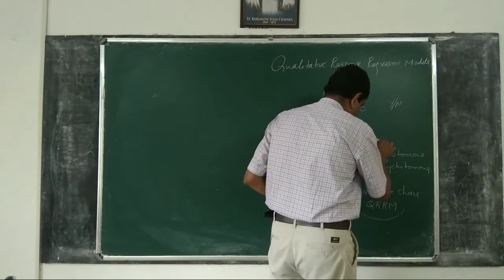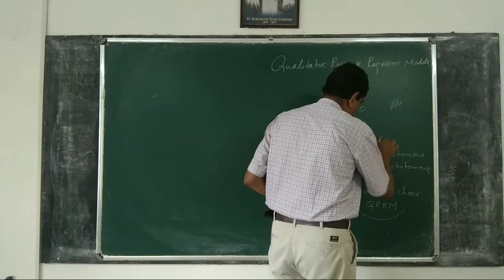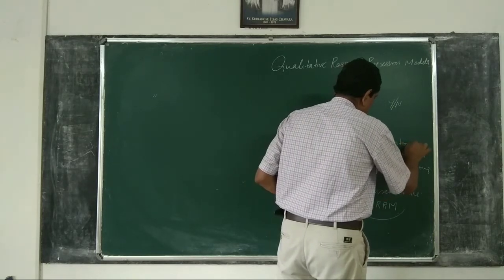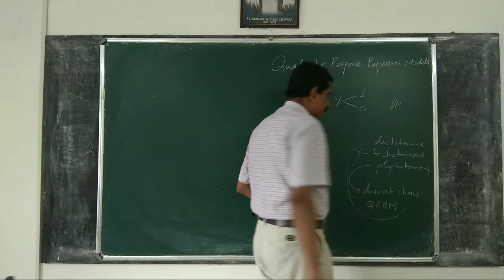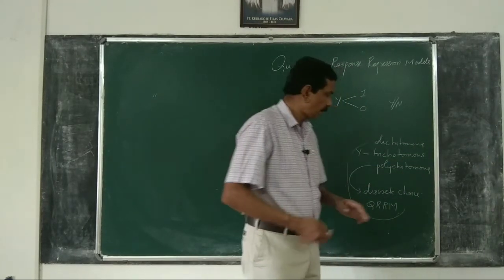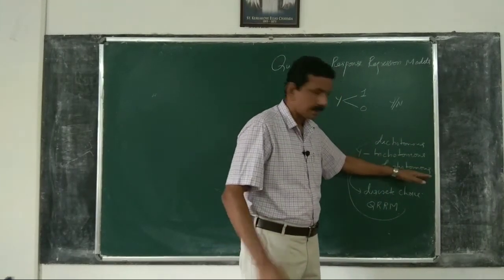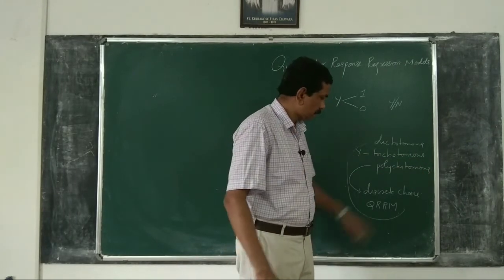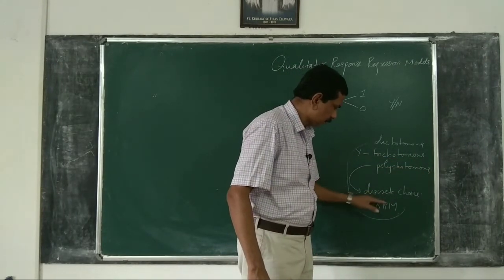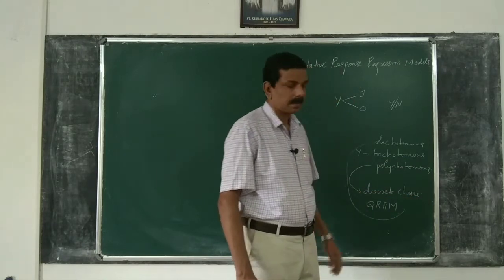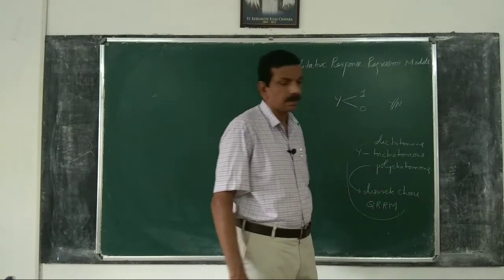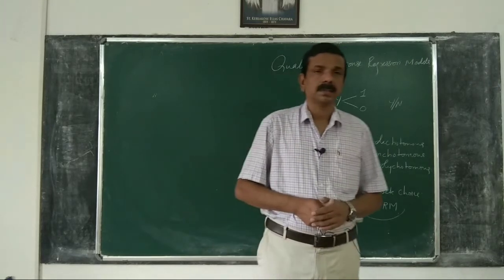Dichotomous means two values, trichotomous means three values, and polychotomous means multiple categories — four, five, etc. As Y takes a limited number of values, we have discrete choice models, also called qualitative response regression models.